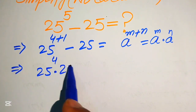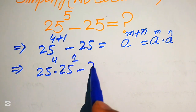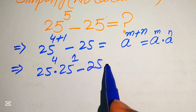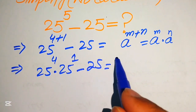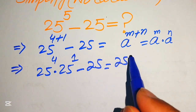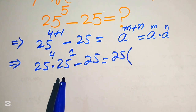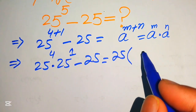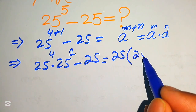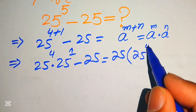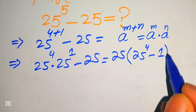It will be written as 25 to the power of 4, times 25 to the power of 1, minus 25. Now we see that 25 is the common term, so we take 25 common and get the remaining values as 25 to the power of 4 minus 1.